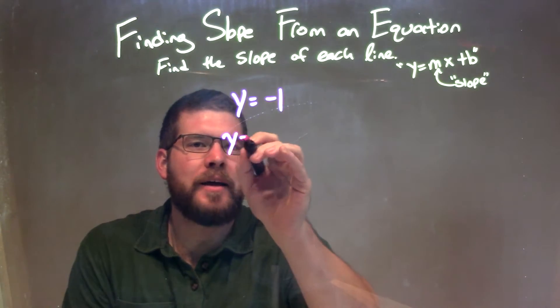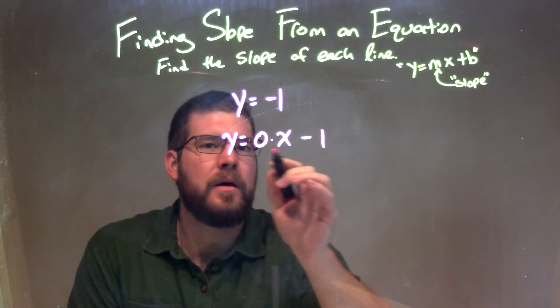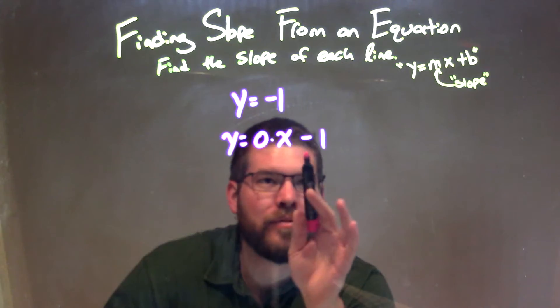Well, wouldn't this be the same as y equals 0 times x minus 1? Well, 0 times x is just 0, right? So we really have y equals negative 1 here.